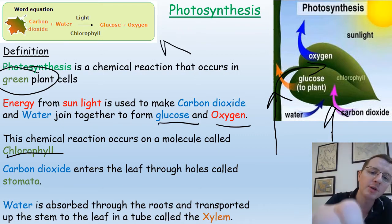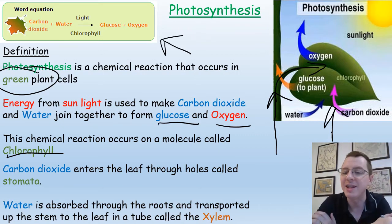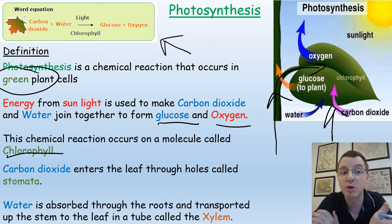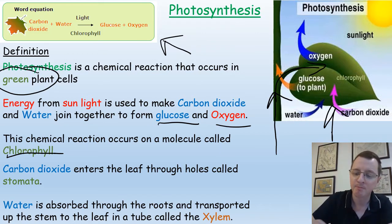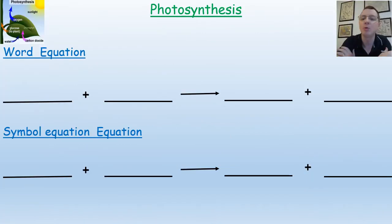So at the top here we've got a brief summary of the word equation, because of course this is a chemical reaction. Therefore it must follow that it has an equation. Let's find out how good you are. Pause the video at this point. Can you write down the word equation and can you write down the balanced symbol equation for photosynthesis?